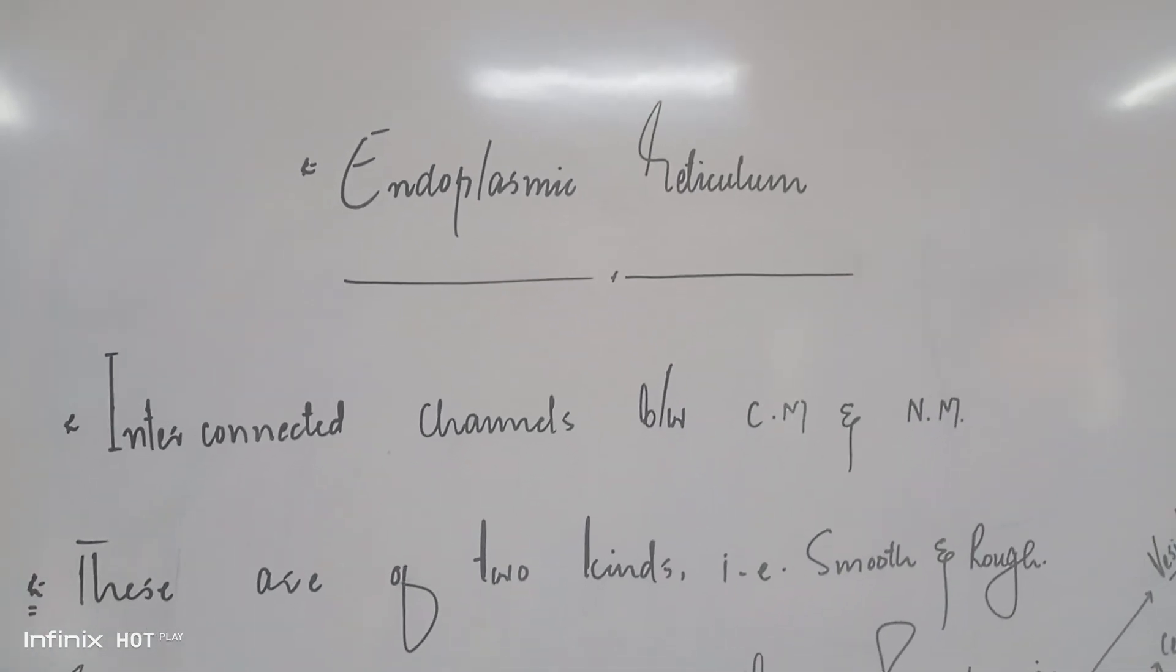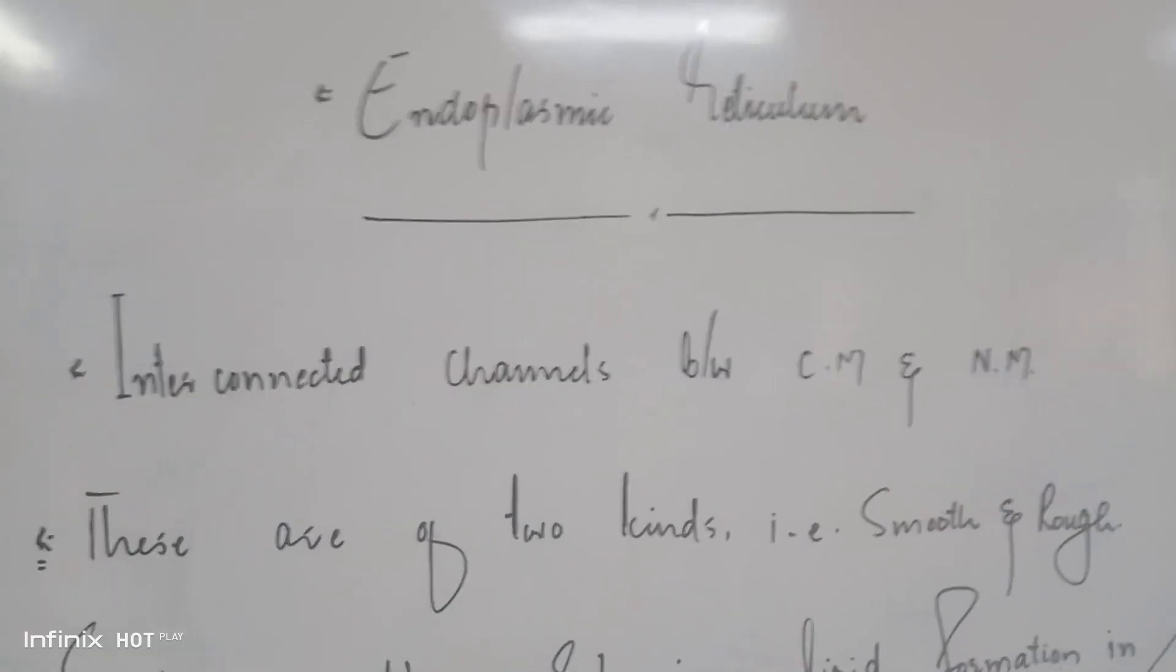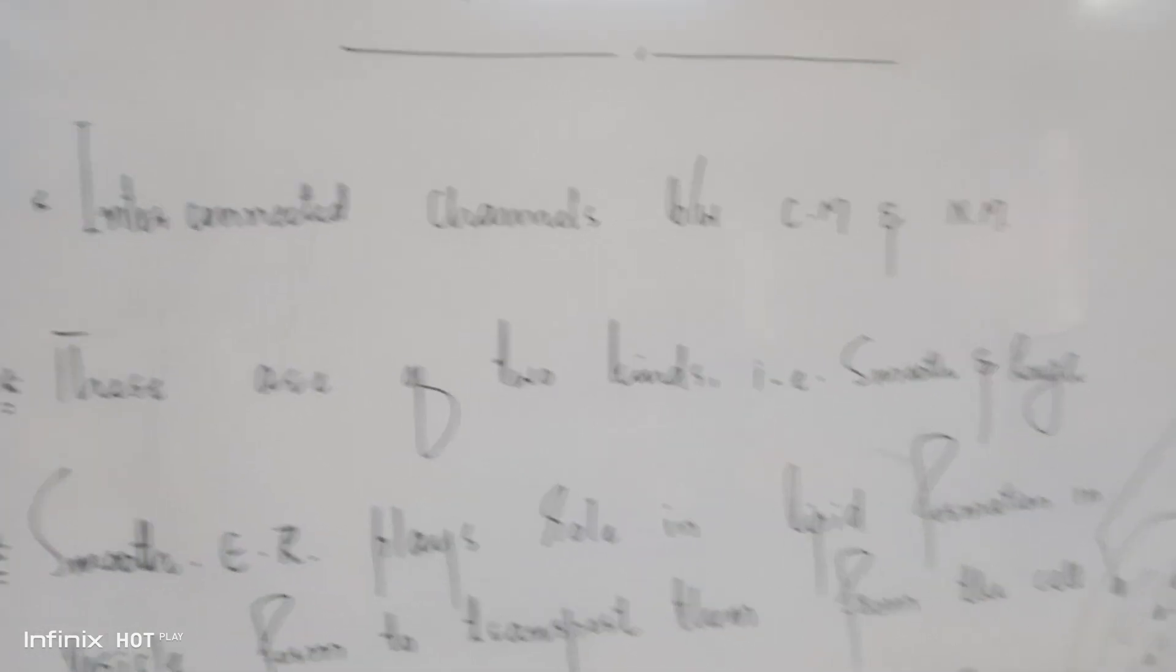Endoplasmic reticulum are interconnected channels between the cell membrane and nuclear membrane. These are of two kinds: smooth and rough.